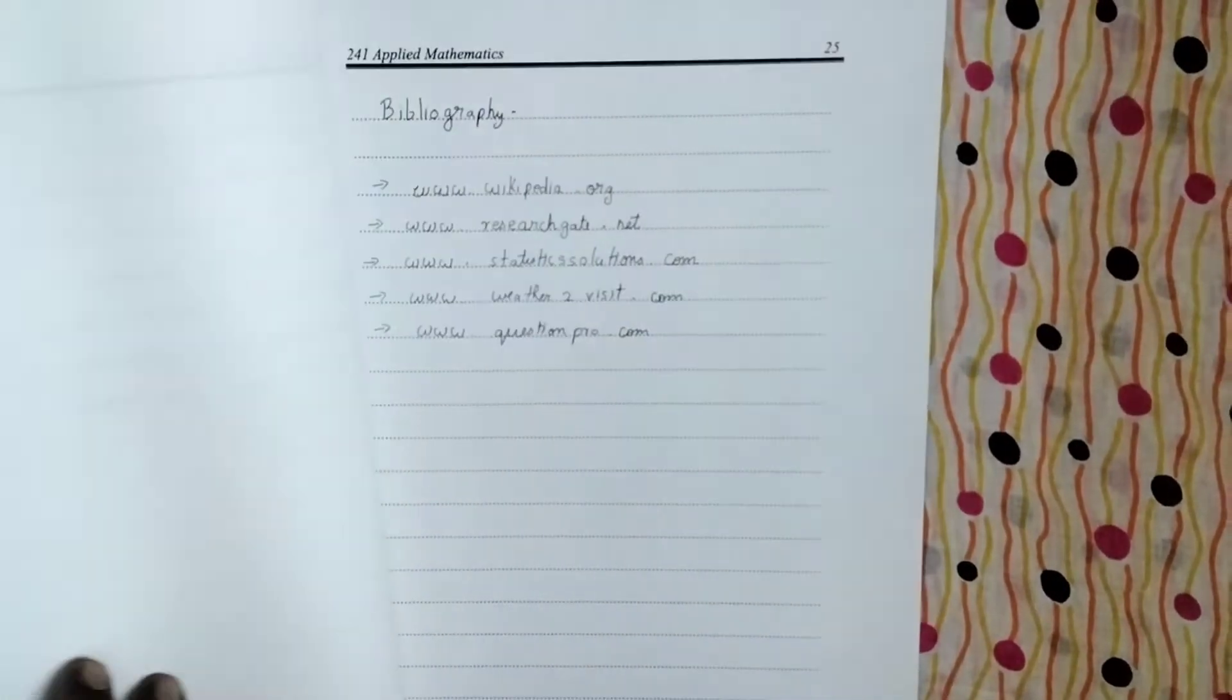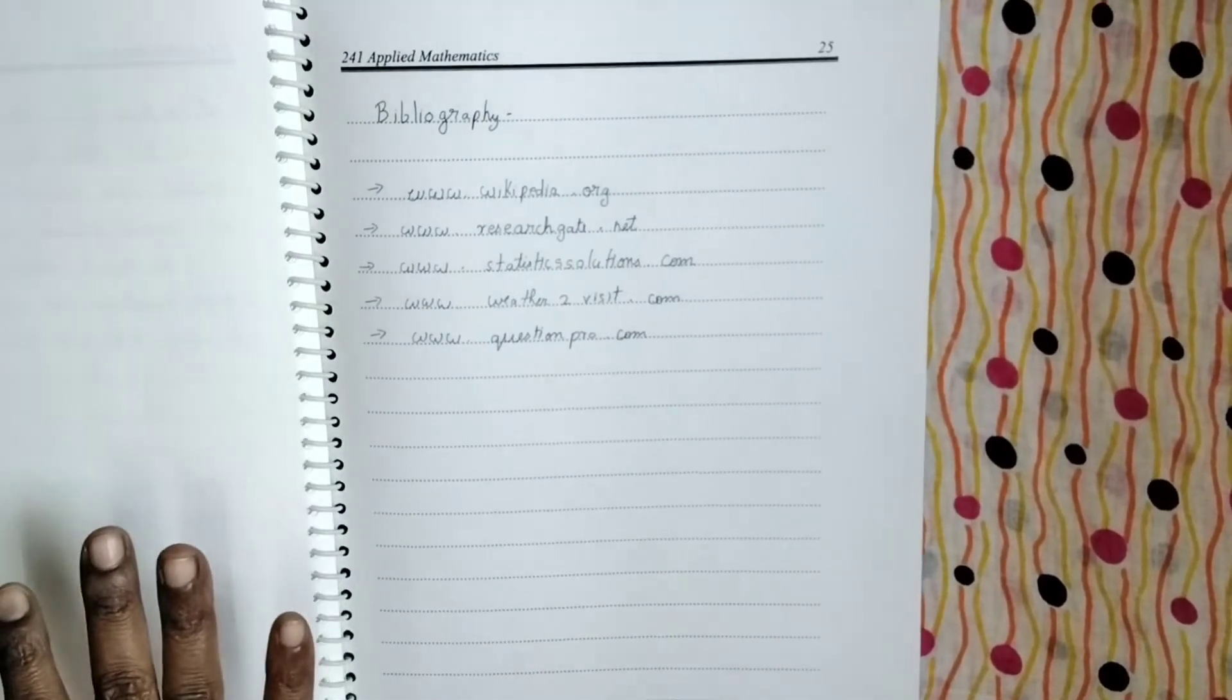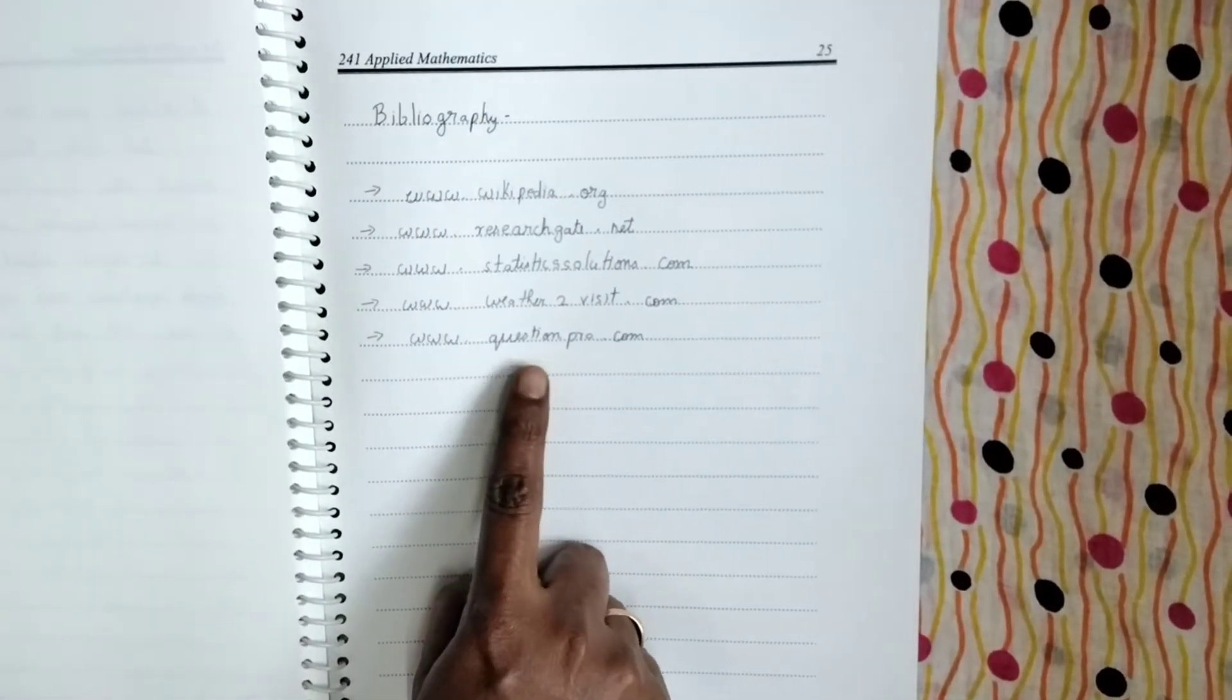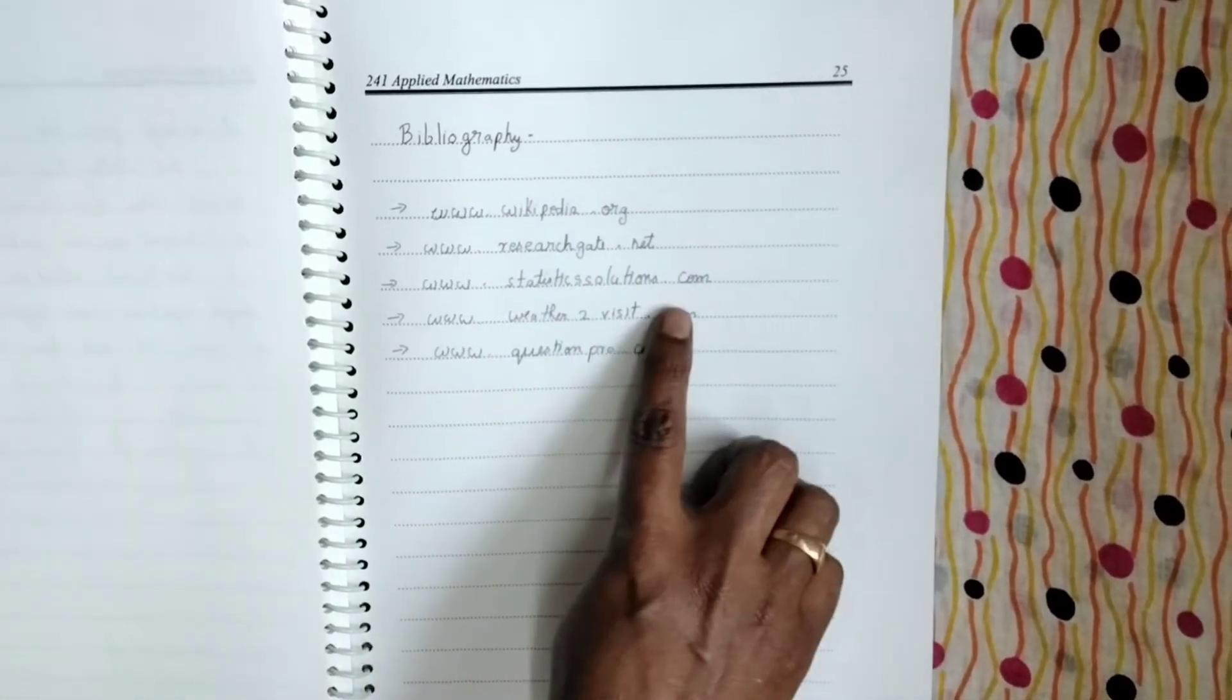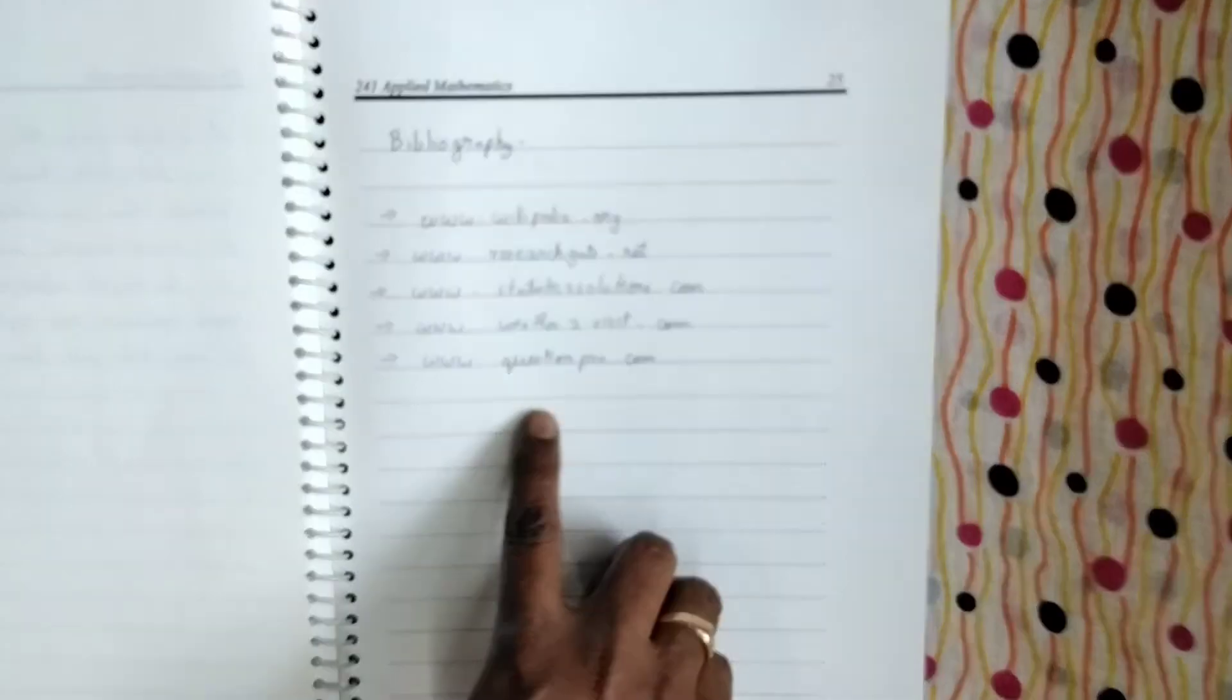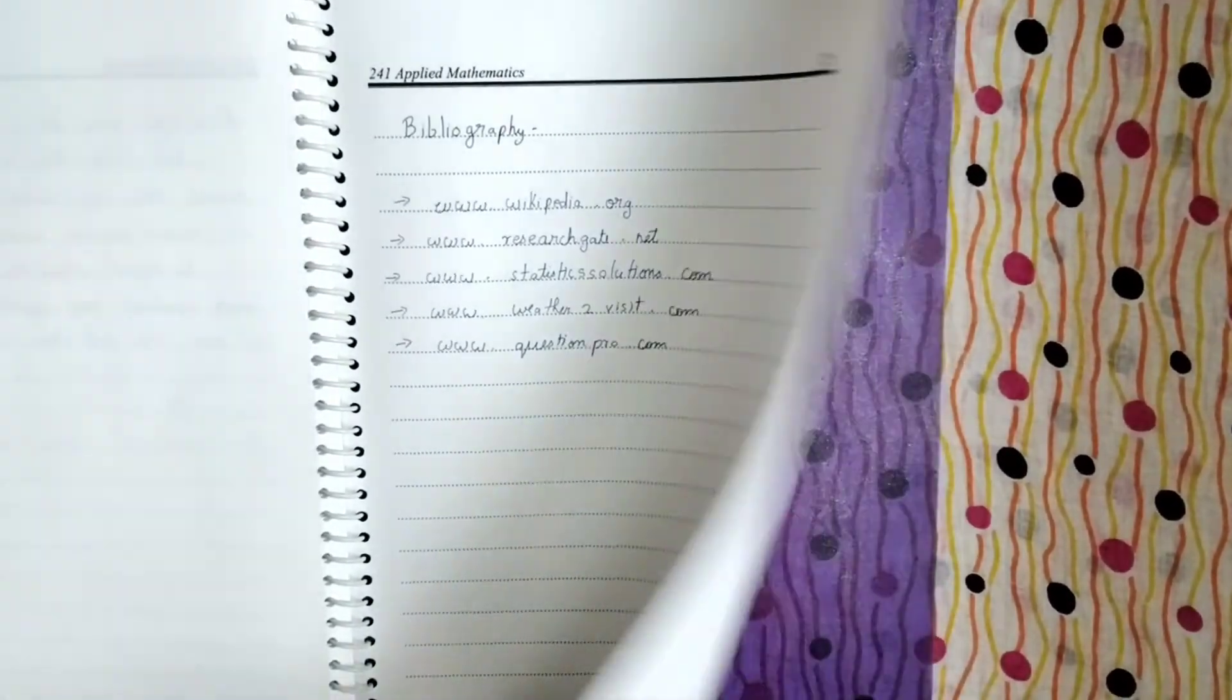So this is the sample of the project. In bibliography, he's given all the sites from where he's taken the data. So from Wikipedia, from ResearchGate, from StatisticsSolution, from WeatherToVisit and Quora Proof. So from all this he's taken.